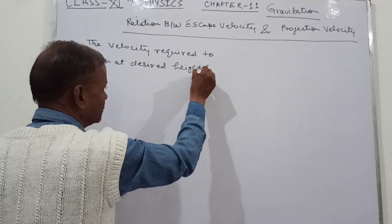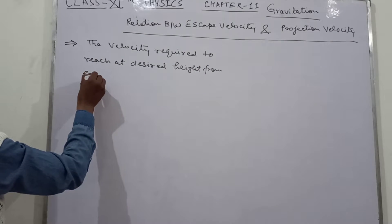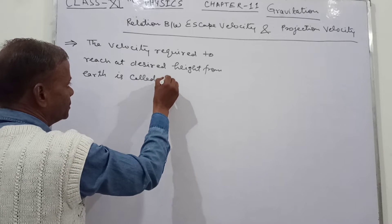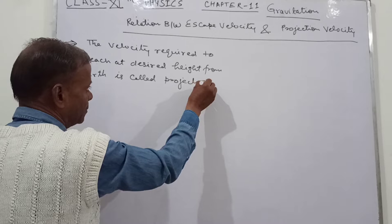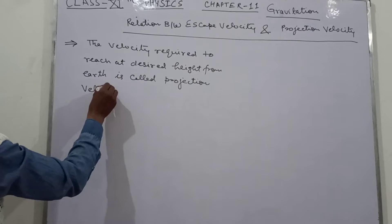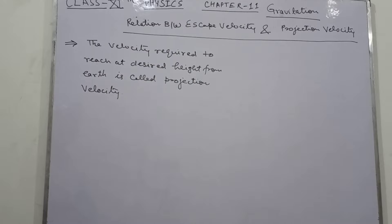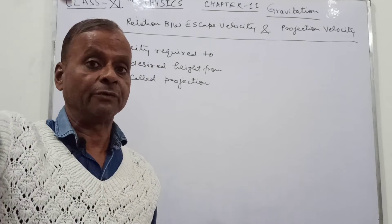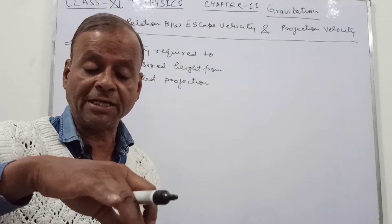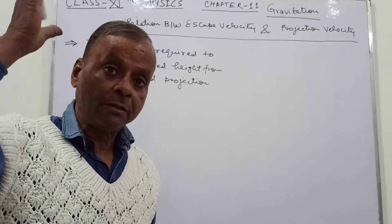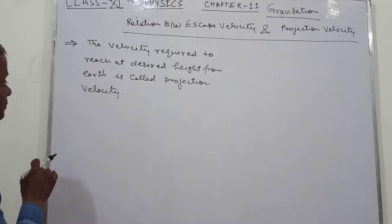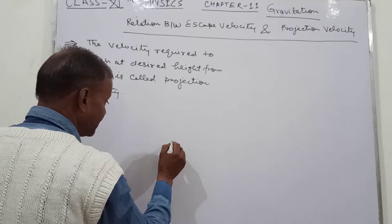The velocity required to reach a desired height from the Earth is called projection velocity. The projection velocity is the velocity required to reach a desired height — that is, how much speed is required for the body to reach a given height.